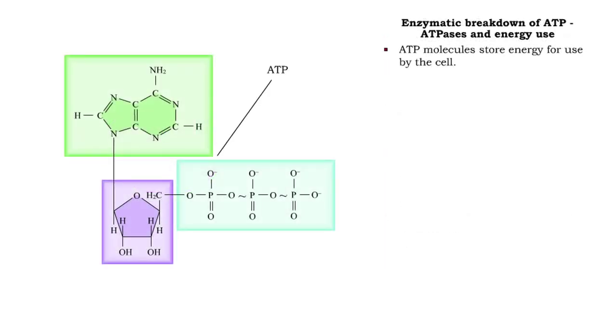ATP, or adenosine triphosphate, is a molecule that stores energy that can be used by the cell. The usable energy is stored in the bond holding the third phosphate.